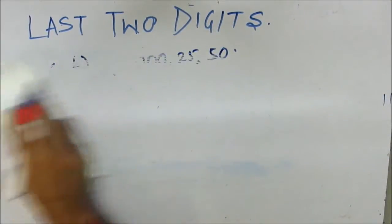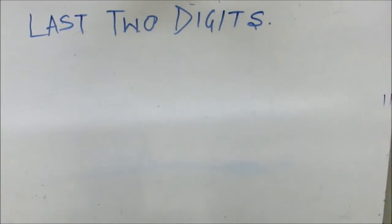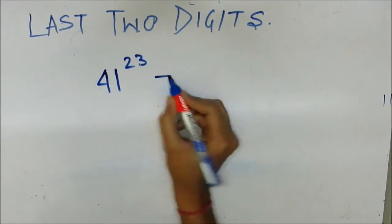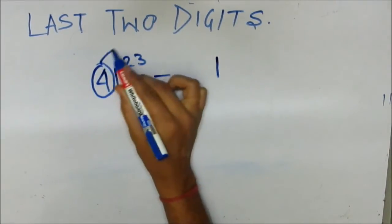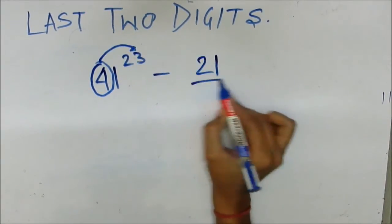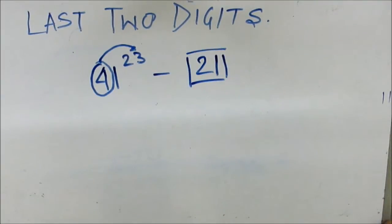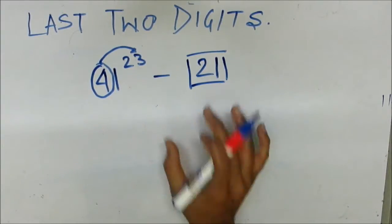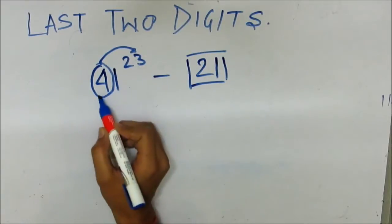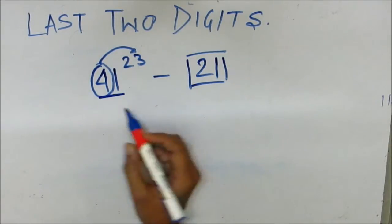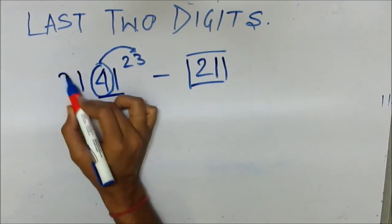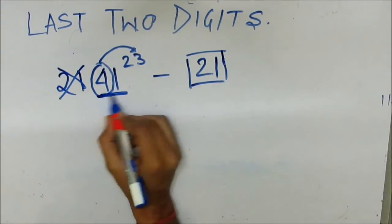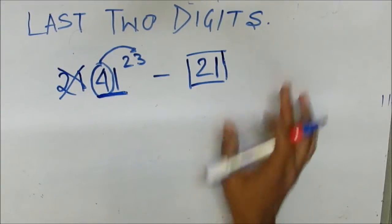For example 41 to the power 23: the last digit is 1, and the second last digit is 4 × 3 = 12, so we take 2. The last two digits are 21. Only the last two digits of the base number matter — whether the number is 141 or 2141, in every case the last two digits will be 21, because only the last two digits matter in finding the last two digits of the final expression.